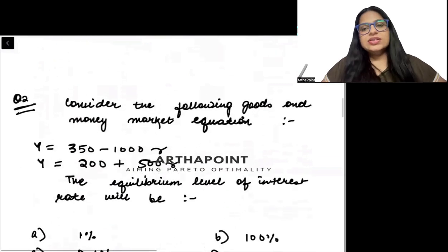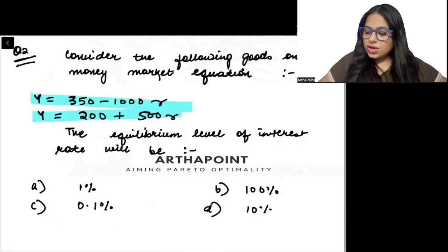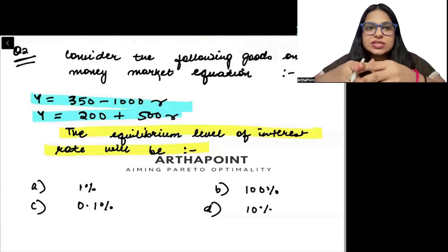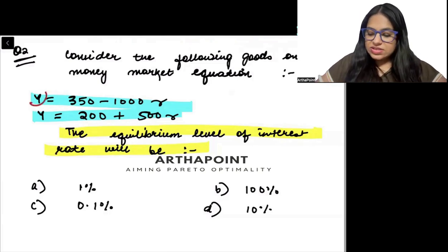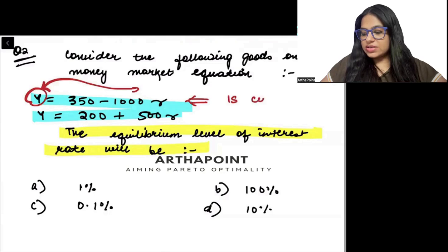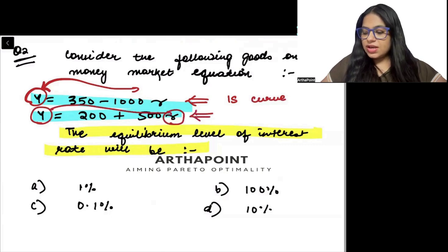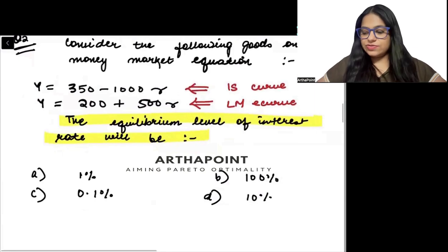Come to the next question. It says consider the following goods market and money market equation. When two equations are given to you, the equilibrium level of interest rate will be. So the first important thing is, can you tell me which equation represents the IS curve and which equation represents the LM curve beta? So when we see that there is inverse relationship between income and interest rate, clearly that equation is the IS curve beta. So yes, you are correct that the first equation will be the IS curve and second equation will be the LM curve.